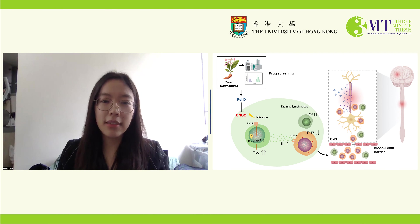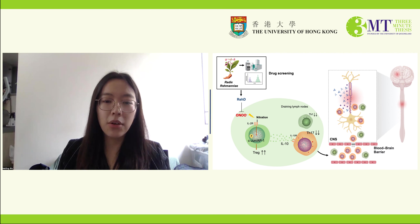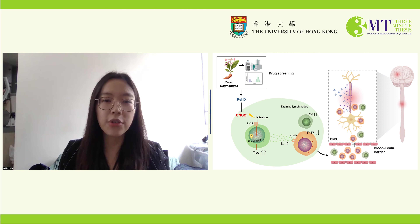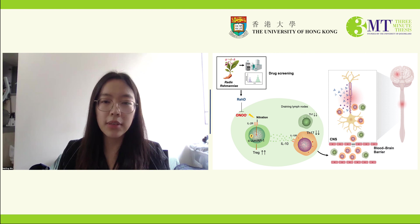Hello, everyone. Multiple sclerosis is an autoimmune disease characterized by inflammatory myelin damage and axonal degradation in the central nervous system, eventually inducing paralysis.